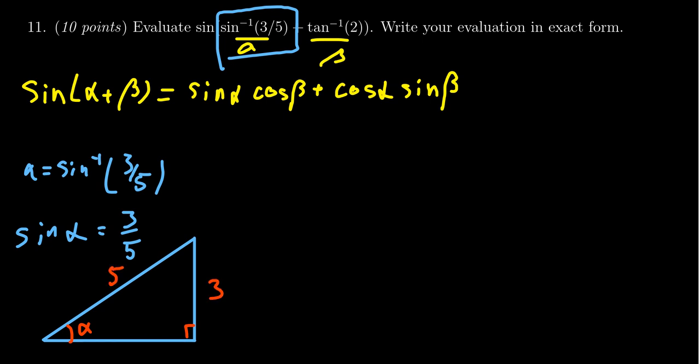By the Pythagorean theorem, the other side is going to equal four. So we know that sine of alpha is three-fifths, then we also know that cosine of alpha, which we need to know, is going to be four-fifths.